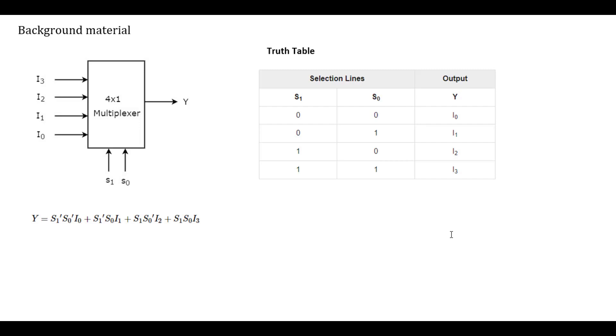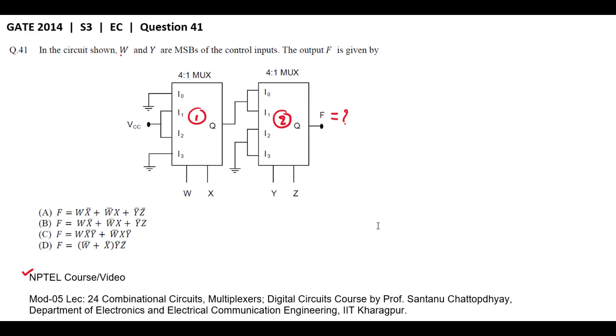The output equation for the 4 by 1 multiplexer is given here. In the problem, they have mentioned W and Y are MSBs of the control inputs. So I will treat this as selection input S1, this X as selection input S0. Similarly, this as S1 and this as S0.